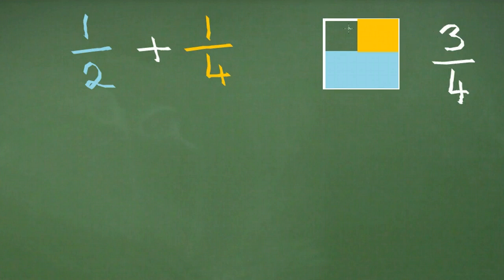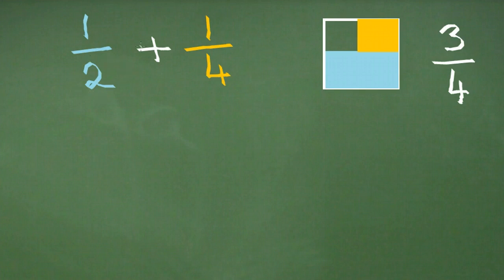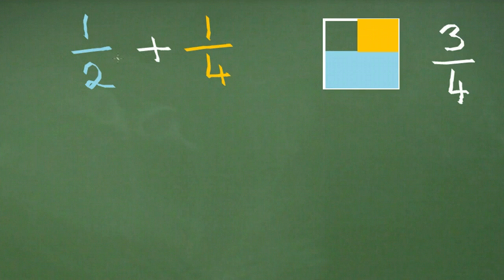That shows you how to do it visually, but in maths there's a mathematical way to do it, which is very useful for more complicated calculations. The way to do it mathematically is to make the denominator of both fractions the same. We have two on the bottom of our half and four on the bottom of our quarter, so we need to make both these numbers the same. We can do this by making the two into a four by multiplying by two, because two times two is four.